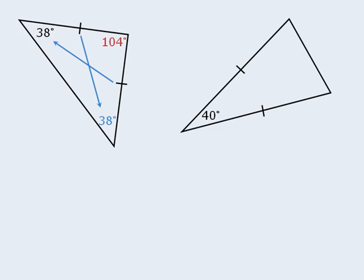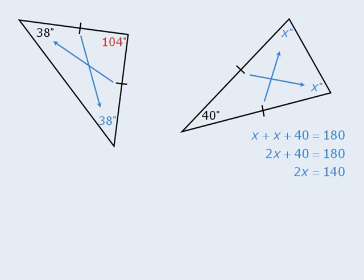Let's try one more. What are the two remaining angles here? Well, the two angles opposite the two equal sides must be equal, so we will call both angles x for the moment. Since all three angles in this triangle must add to 180 degrees, we can write the equation x plus x plus 40 equals 180. To solve this equation for x, we will simplify the left-hand side, then subtract 40 from both sides, and then divide both sides by 2 to see that x is equal to 70.